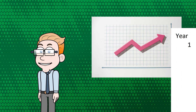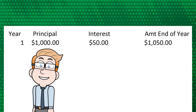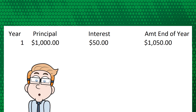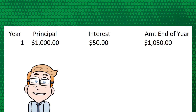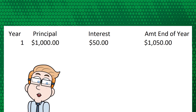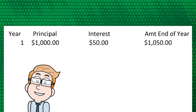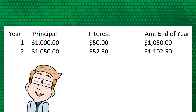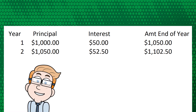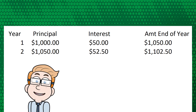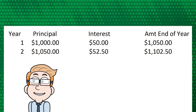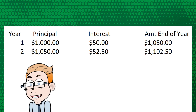Here's a step-by-step walkthrough of how this example works. In the first year, you start with $1,000 and earn five percent of that — $50 — as interest, ending the year with $1,050. In the second year, you start with that $1,050 and earn five percent interest on it, which comes out to $52.50.